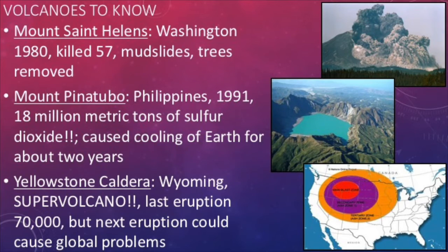Famous volcanoes to be aware of include Mount St. Helens, whose last explosion was in 1980 and led to the destruction of the entire dome of the volcano itself. Mount Pinatubo in the Philippines last erupted in 1991 and released 18 million metric tons of sulfur dioxide; as a result, it cooled the earth for about two years in what is known as a volcanic winter. Last, we have the Yellowstone Caldera, a supervolcano in Wyoming that could erupt at any moment and cause global complications — from a volcanic winter to a massive extinction. The explosion itself is expected to release an ash cloud that will engulf the entire United States.